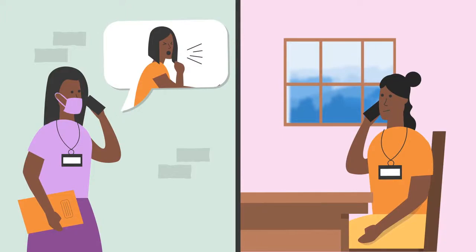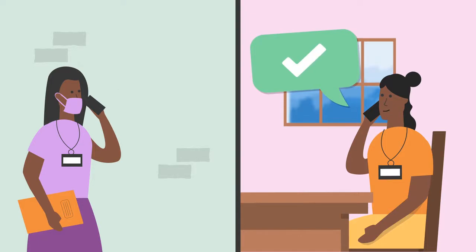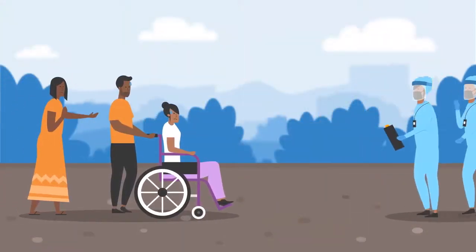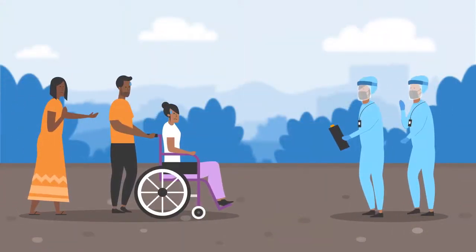Mary then reports this information to her supervisor. Her supervisor checks the information and confirms that it may signal a potential outbreak of COVID-19. She then arranges for the rapid response team to visit the village where the social gathering was held.